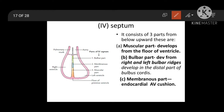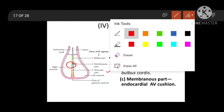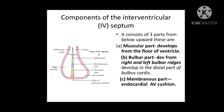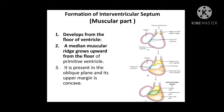The gap between the bulbar septum and the muscular septum is called the interventricular foramen, and this gap is filled by the membranous part. So interventricular septum is made up of three parts: muscular, bulbar, and membranous.